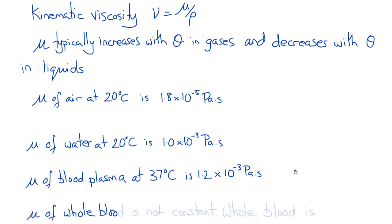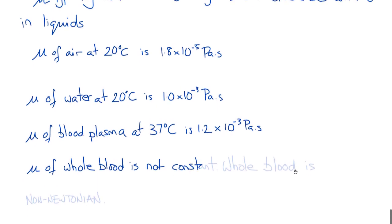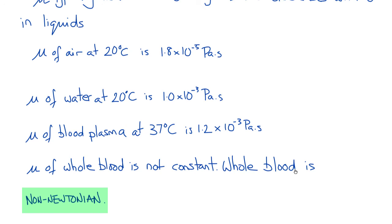But the viscosity of whole blood is not a constant. Unlike blood plasma, whole blood is a non-Newtonian fluid. The presence of red blood cells makes whole blood non-linear, and it's sometimes referred to as a shear-thinning fluid: the faster the blood flows — the higher the shear rate — the lower the apparent viscosity. So the viscosity is no longer a constant but depends on the shear rate, making a Newtonian viscous fluid a poor approximation of whole blood under many conditions.